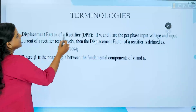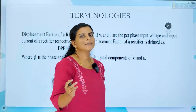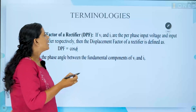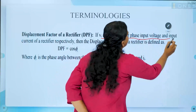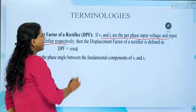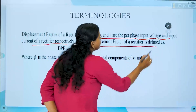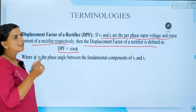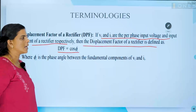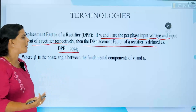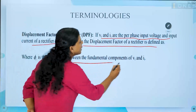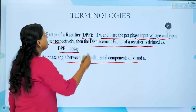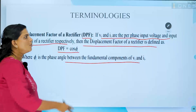Next is displacement factor. If Vi and Ii are the RMS input voltage and input current of a rectifier respectively, then the displacement factor of the rectifier is defined as DPF = cos φ, where φ is the phase angle between the fundamental components of Vi and Ii. So displacement factor DPF equals cos of the angle between voltage and current.